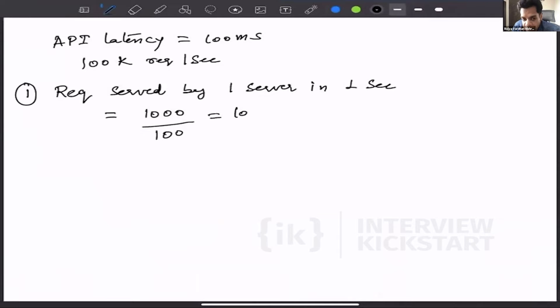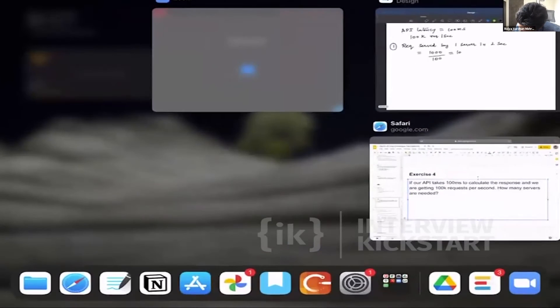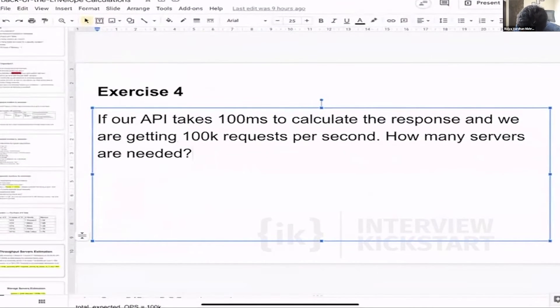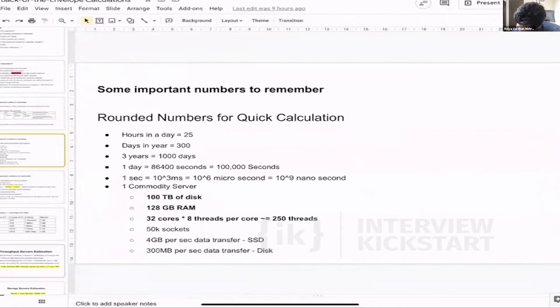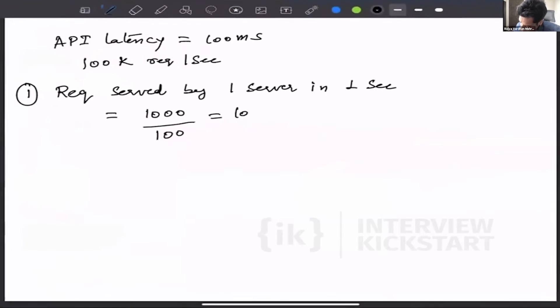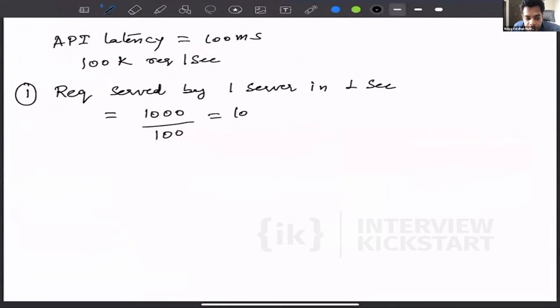In our case, 1000 by 100 equals 10 requests by one thread. In the numbers to remember, we can say that there are 250 threads. So we multiply it by 250, which means 2,500 requests per second can be served by one server.